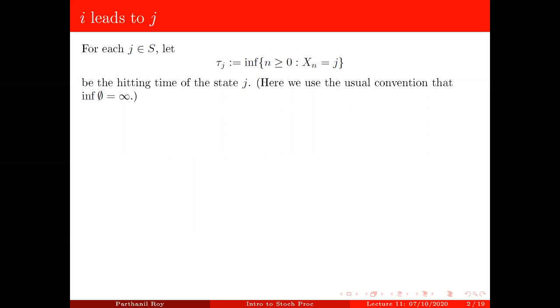So first we define what is called a hitting time of the state j. You take any state the Markov chain on the state space. Hitting time of the state j is tau j, which is the first time the Markov chain equals j. Now this infimum is taken over n bigger than or equal to zero, so n equal to zero is also allowed.